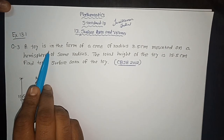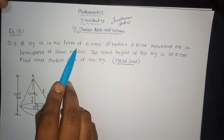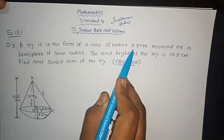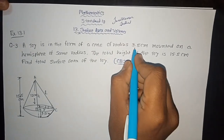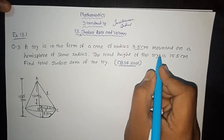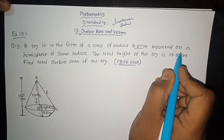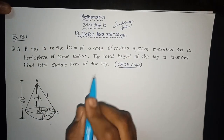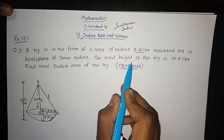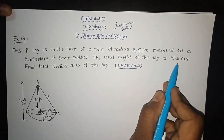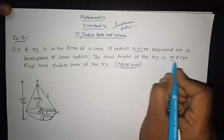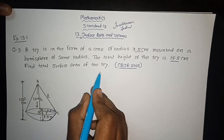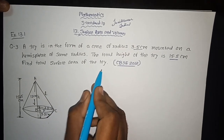Let us see. A toy is in the form of a cone of radius 3.5 cm mounted on the hemisphere. The total height of the toy is given, that is 15.5 cm. Then find the total surface area of the toy.